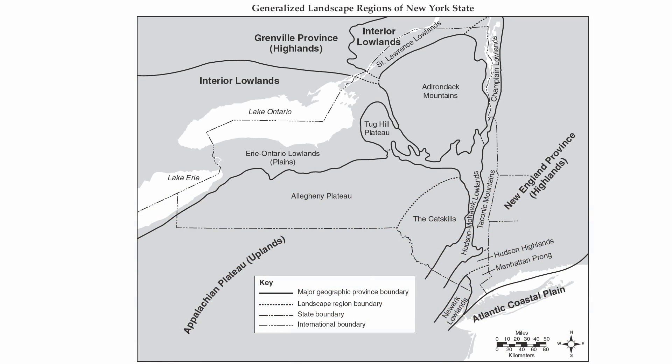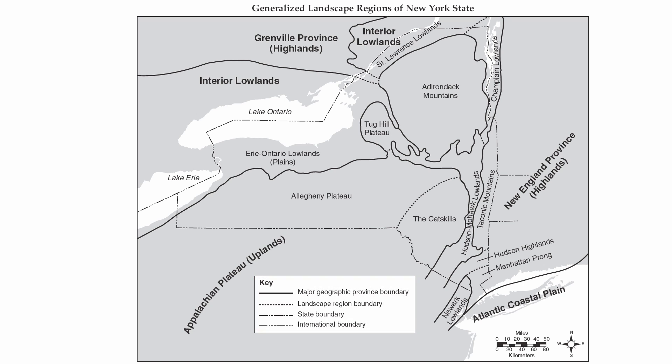Before we get into the different features, there are a couple pieces of information at the bottom of this map you need to know. First, you have your major boundaries — whether it's your province boundaries, landscape boundaries, or your state and international boundaries. You also have a scale at the bottom for miles and kilometers, and your compass directions.